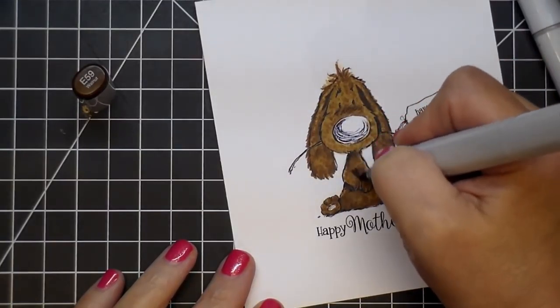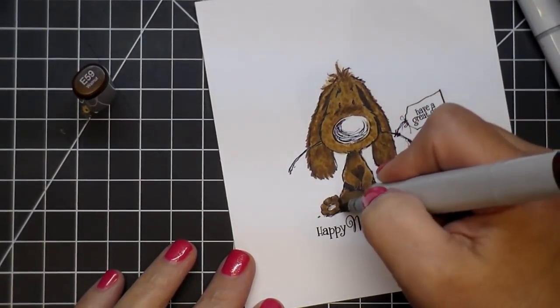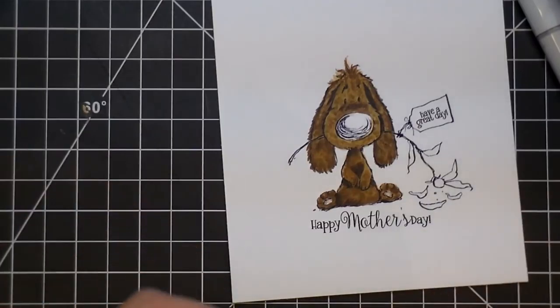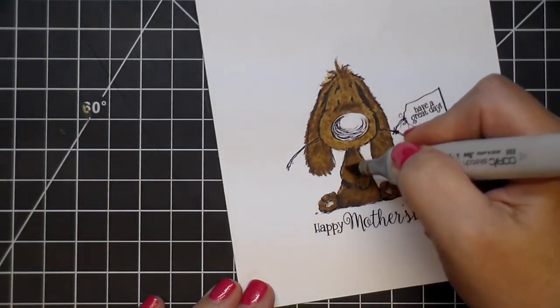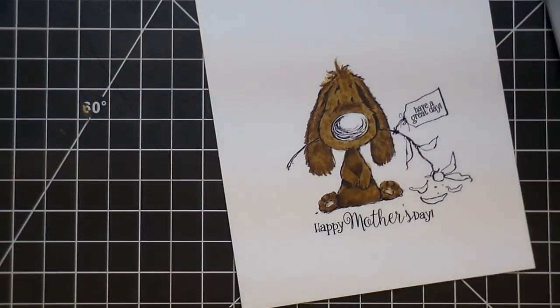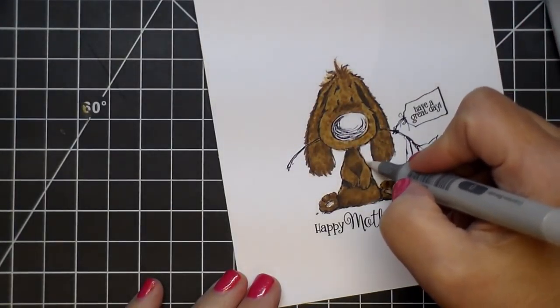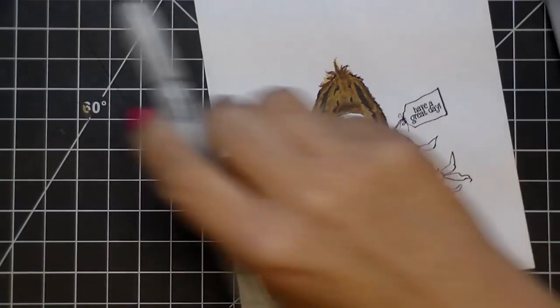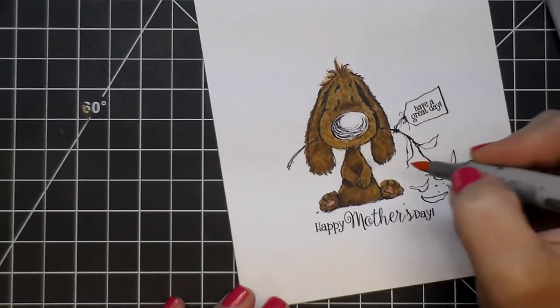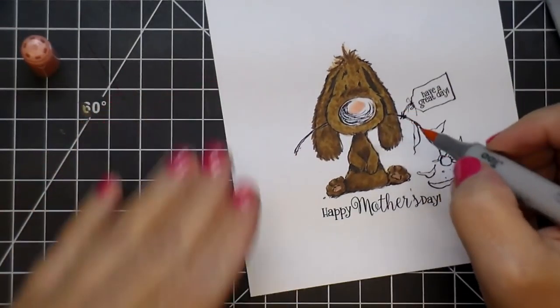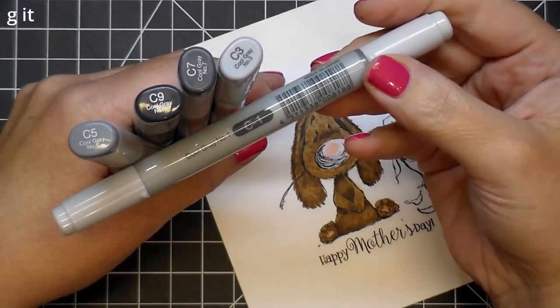Again, going back in adding the dark color, the darkest color, and then blending that out again. I went outside the line there, so I'm just using my colorless blender. And now I'm using the RV42, I believe it is, for his paws and a little bit in the middle of his nose.